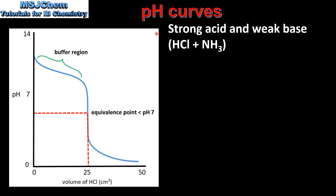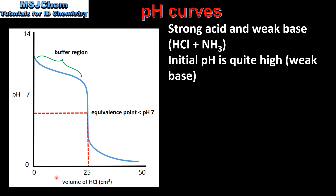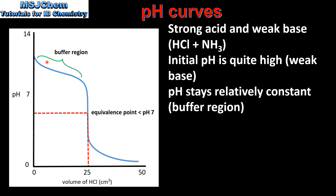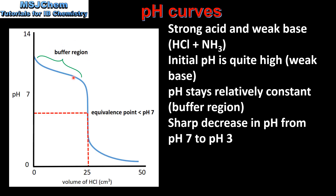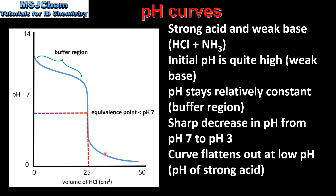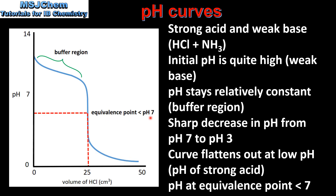The final pH curve is for a strong acid and weak base. Because we are adding the strong acid to the weak base, the initial pH is quite high, which is the pH of a weak base. The pH stays relatively constant, which is the buffer region. There is a sharp decrease in pH from pH 7 to pH 3. The curve flattens out at a low pH, which is the pH of a strong acid. And the pH of the equivalence point is less than 7.